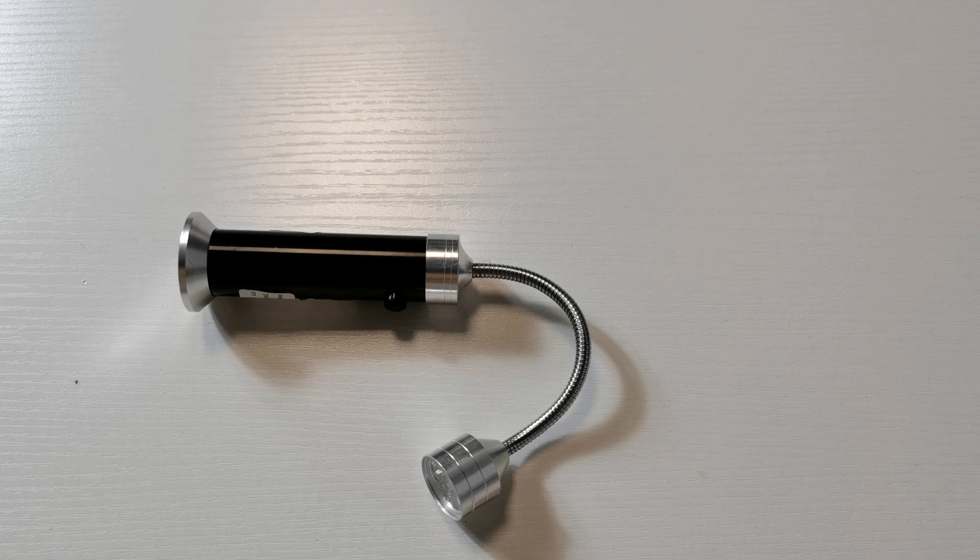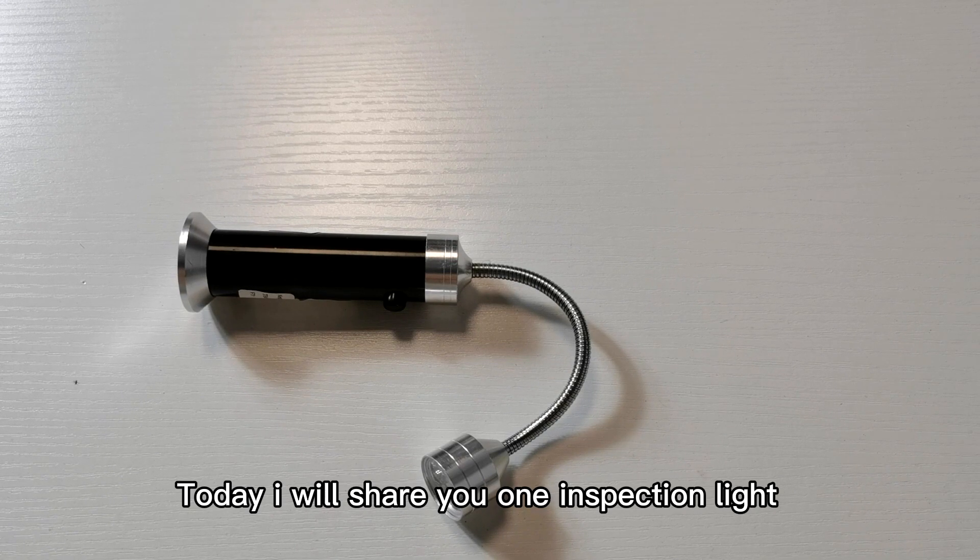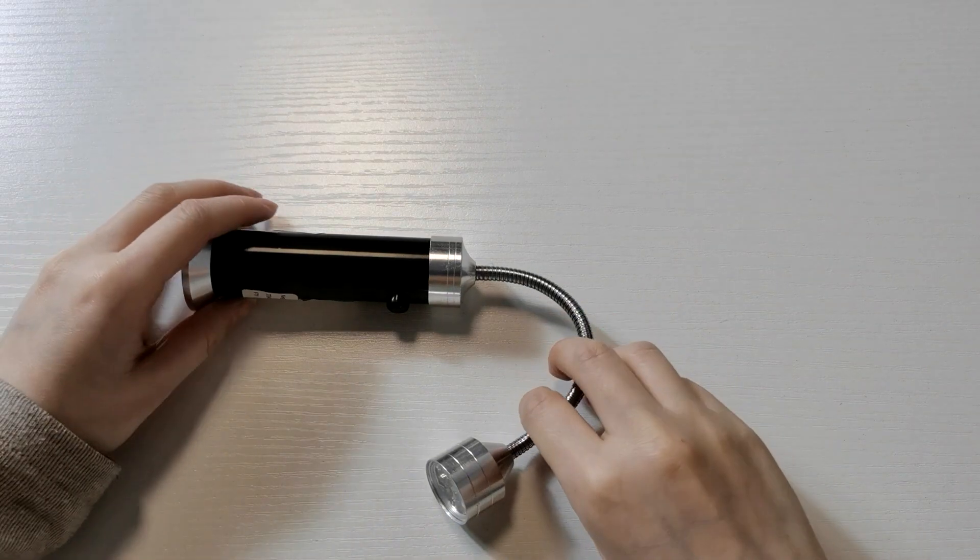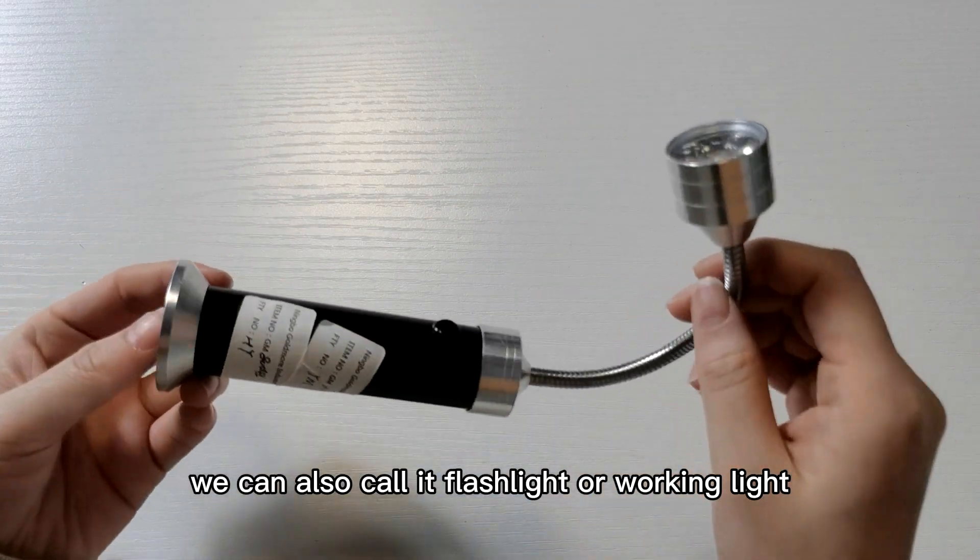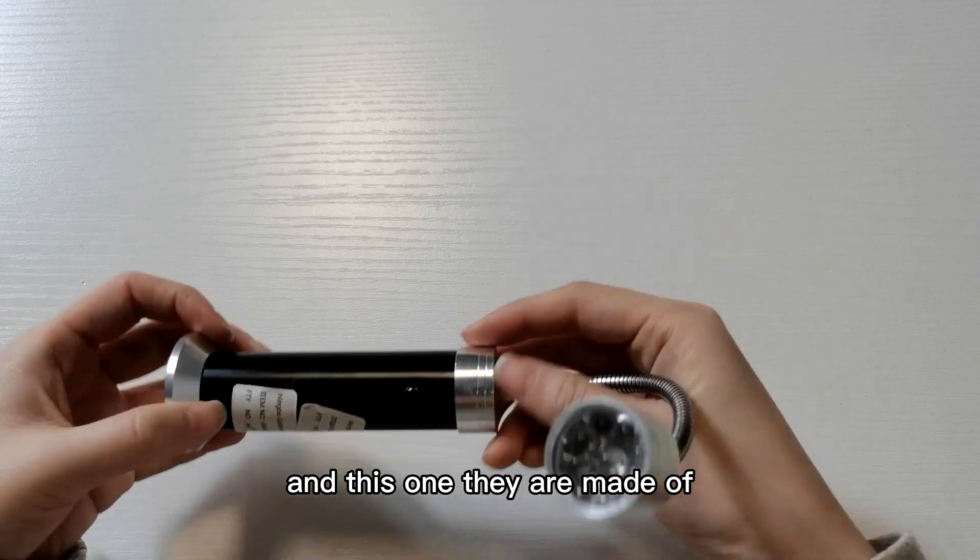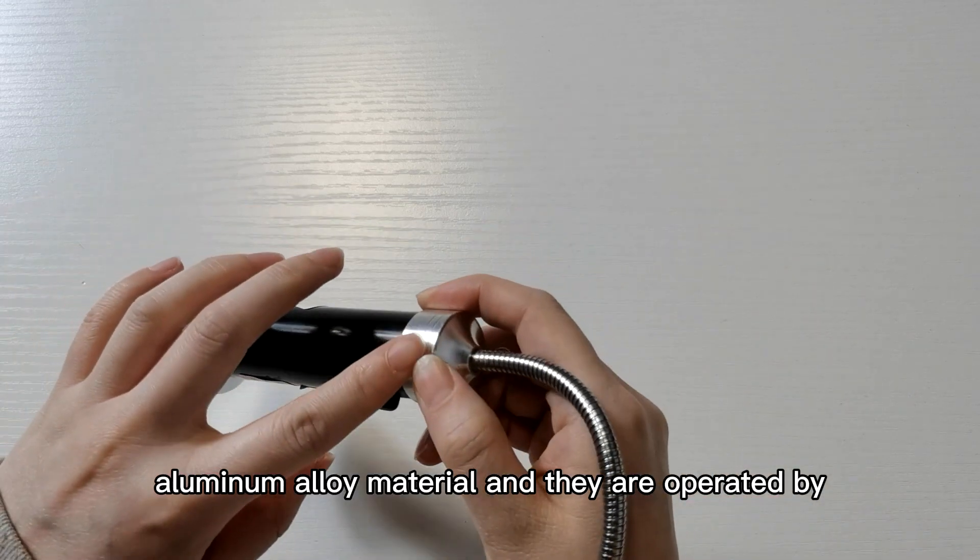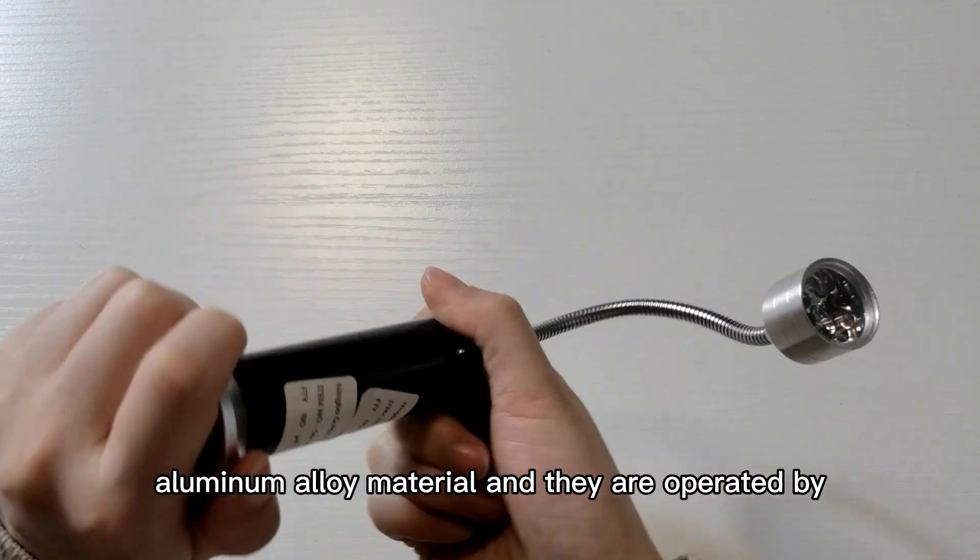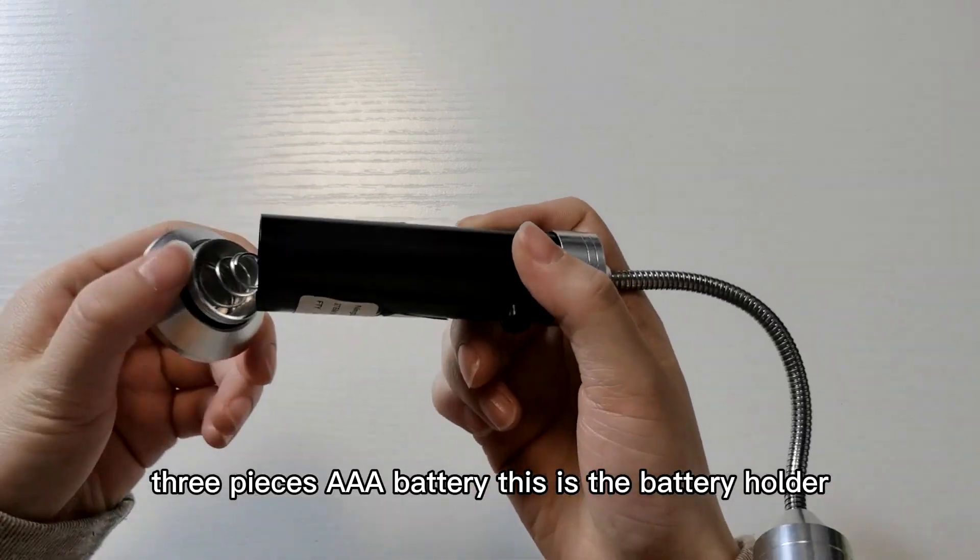Hello, welcome to Golden Mode. Today I will show you one inspection light. We can also call it a flashlight or working light. This one is made of aluminum alloy material and is operated by three pieces AAA battery.